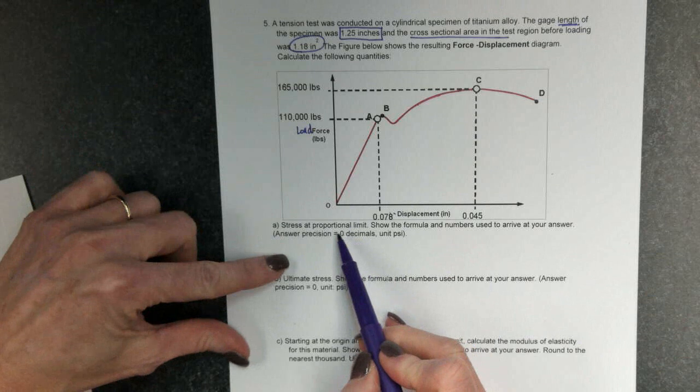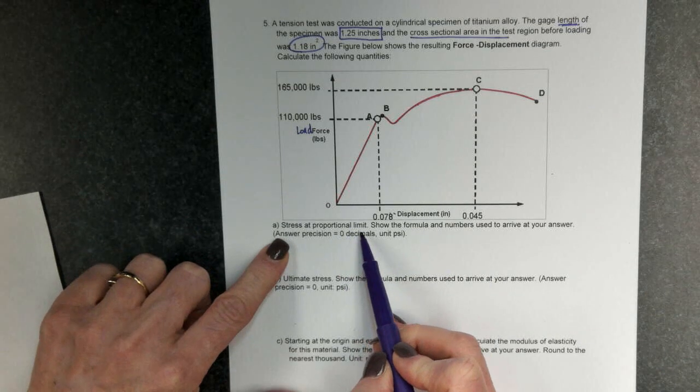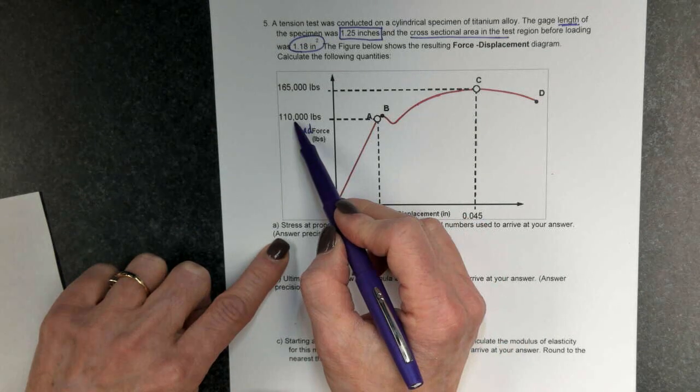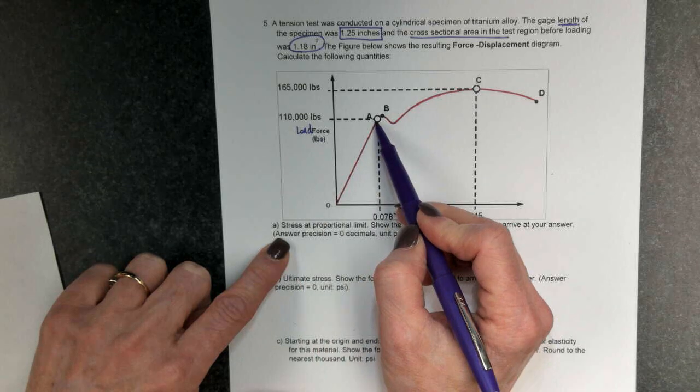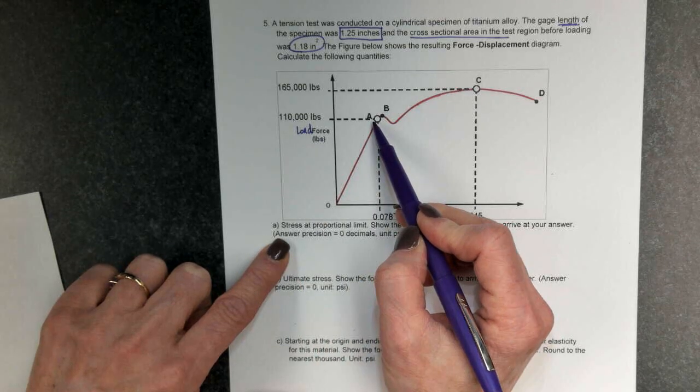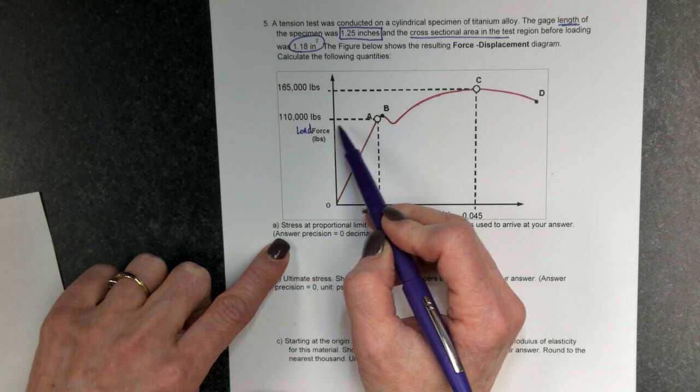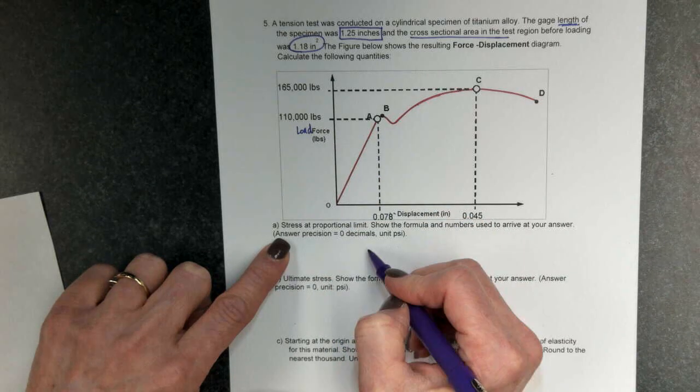So now I'm asked to find the stress at the proportional limit. So I can't just look and say 110,000 pounds. Here's my proportional limit, letter A. Because this is a force diagram, not a stress-strain diagram. So to get stress, we need to do force divided by area.